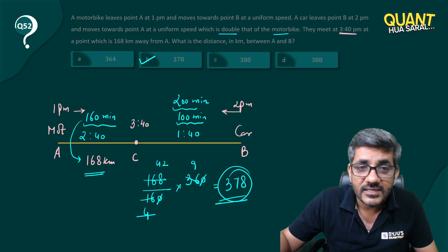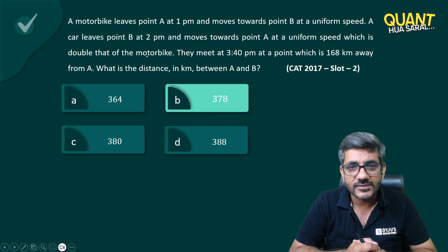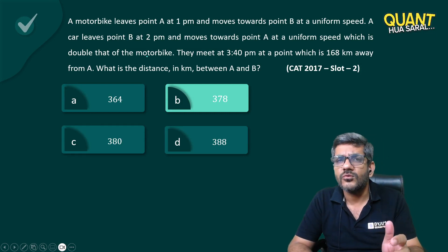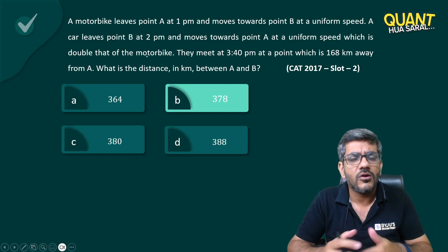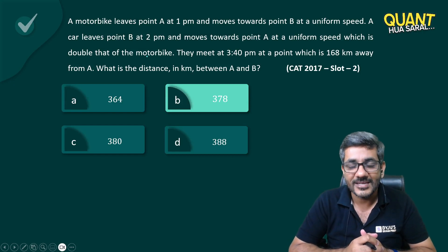Therefore I can say the distance between A and B is 378 kilometers, which is the right answer for us. Though this question was slightly difficult, I would say, still with an aptitude approach you are not making any equations, not taking any variables - you are just able to do it in an aptitude way, much easier. Thank you very much.